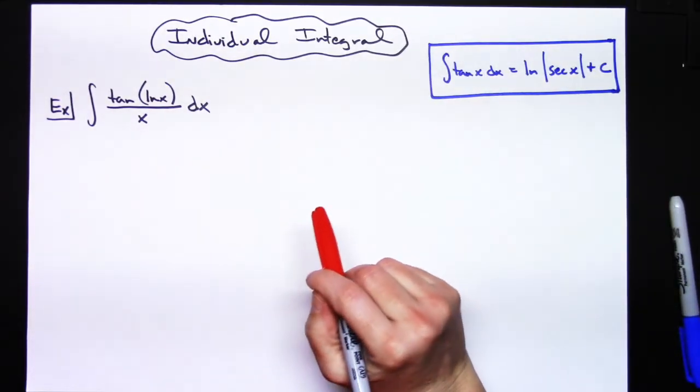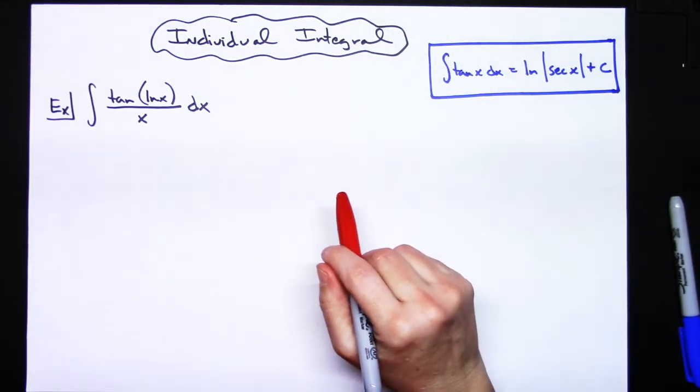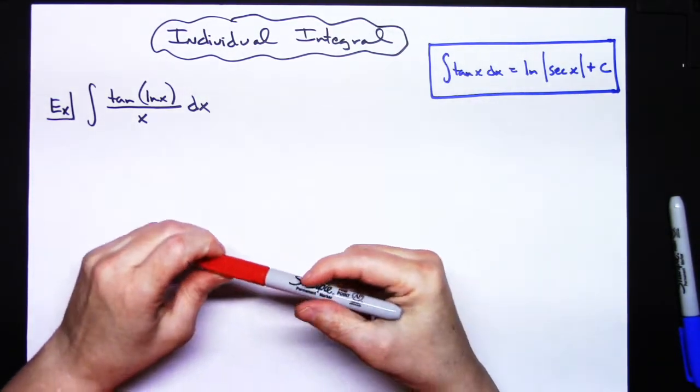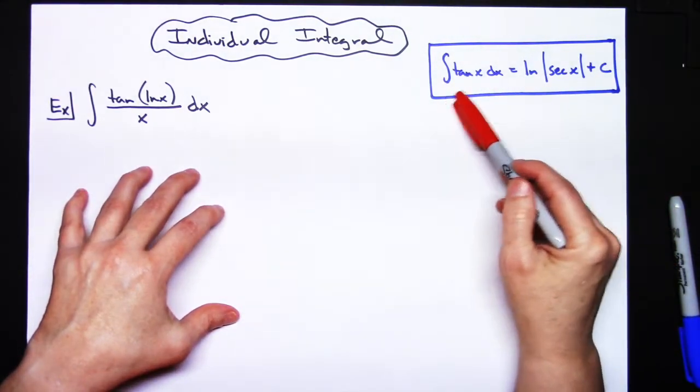Okay, in this video I'm going to do an indefinite integral. It's going to be a basic straightforward u-substitution, one that would probably be found in a calc one class. Now to make this problem shorter I am going to assume...